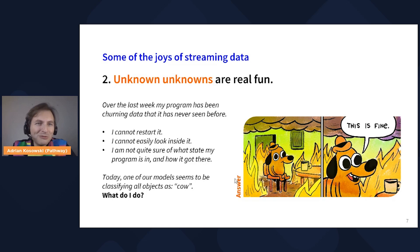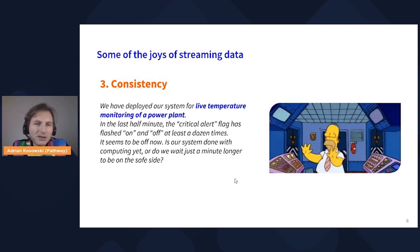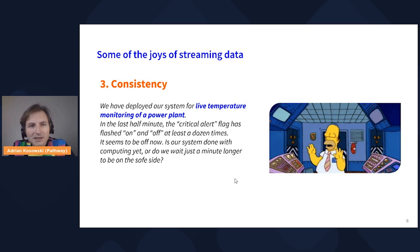Point three is all about data consistency. Suppose we're deploying in production a system doing live temperature monitoring for a power plant. A number of interesting data points have arrived. In the last half minute, the critical alert flag has been flashing on and off at least a dozen times as the system processes data. Now it seems to be off. Is our system done computing and we can sigh with relief? Or do we wait just a minute longer to be safe? Ensuring consistency is one of the bigger pain points in stream data processing.